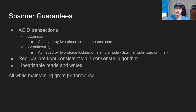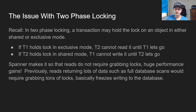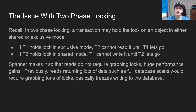Spanner can do all of this while maintaining great performance at scale, which is pretty surprising. They achieve this by optimizing on two-phase locking. The issue with two-phase locking is that a transaction can hold the lock on an object in shared or exclusive mode — reads occur in shared mode and writes in exclusive mode — and reads and writes block one another. So if one transaction holds an exclusive lock to write a row, another transaction can't read it until the first is done. Similarly, if one transaction is reading a row, a second can't write until the first lets go.